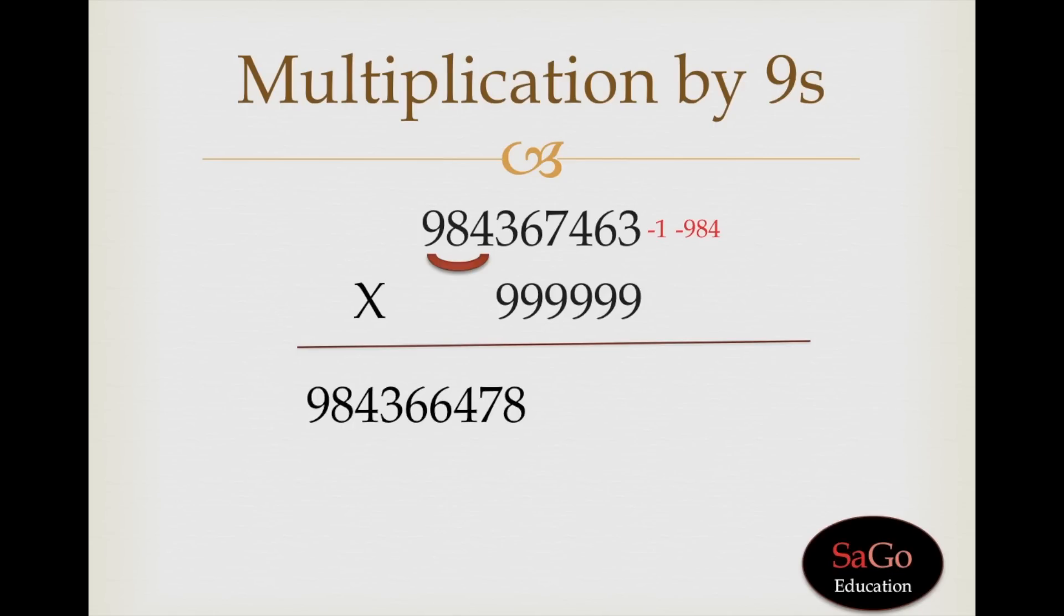Moving forward, in the second step, we need to apply all from 9 and last from 10 method. 367463 are the numbers where 9s are there at the below side. So, apply all from 9, last from 10 on these numbers. When we subtract this digit as per all from 9, last from 10 method, we will get this.